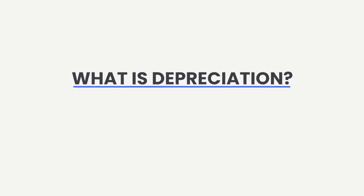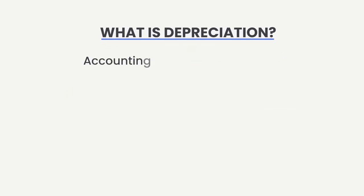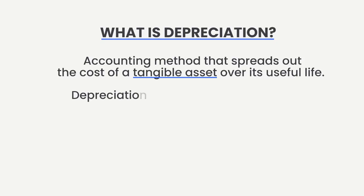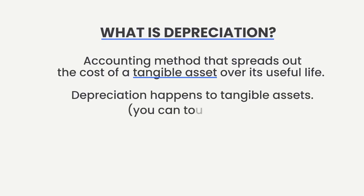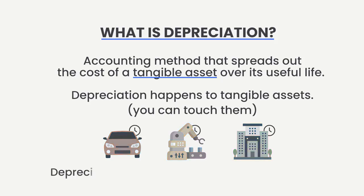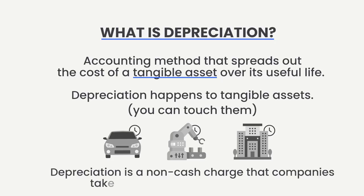So what is depreciation? This is simply an accounting method that spreads out the cost of a tangible asset over its useable life. Depreciation happens to tangible assets, which are assets that you can physically touch, such as a car, manufacturing equipment, or a building. These assets lose value over time, and depreciation is a non-cash charge that companies take to account for that loss of value.